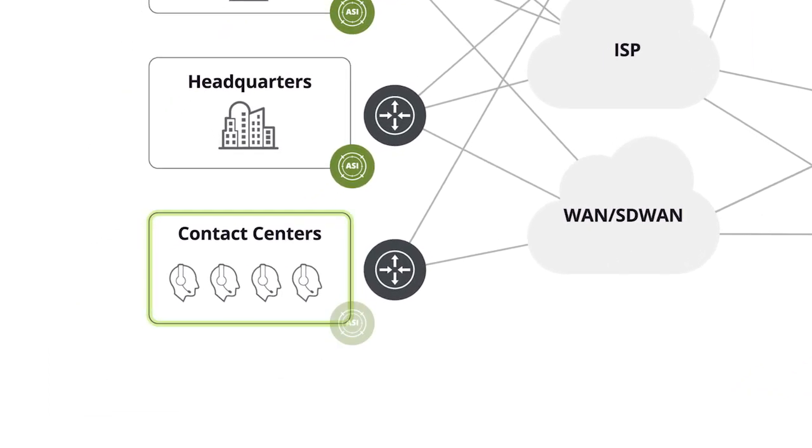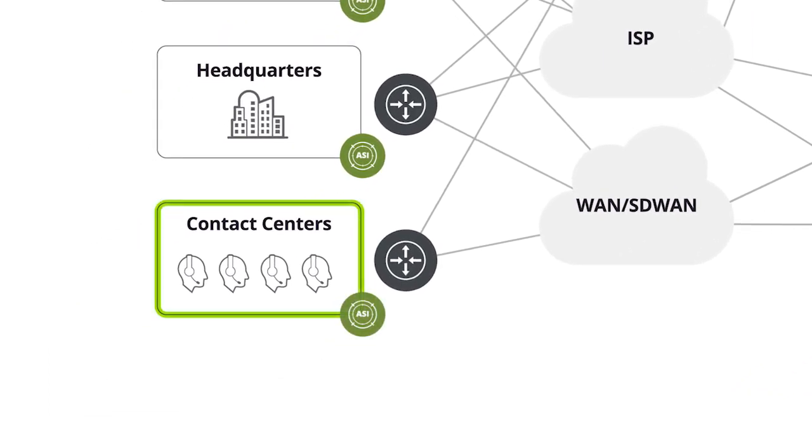Visibility deployed in the contact center, with many agents in a single location, provides quality metrics from the agent's perspective to help identify a problem with the agent's equipment or something at the far end. It will also pinpoint issues with other UC server components often deployed in contact centers, such as SBCs connecting to SIP trunks or gateways to the PSTN. Nowadays, many contact center agents are home working, so visibility there can be instrumented in the same way as discussed earlier.